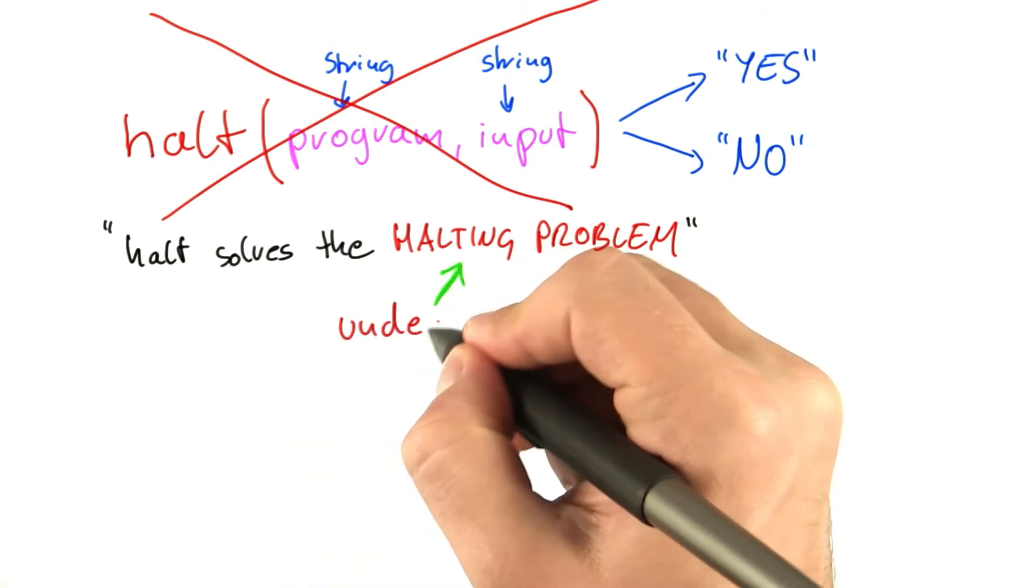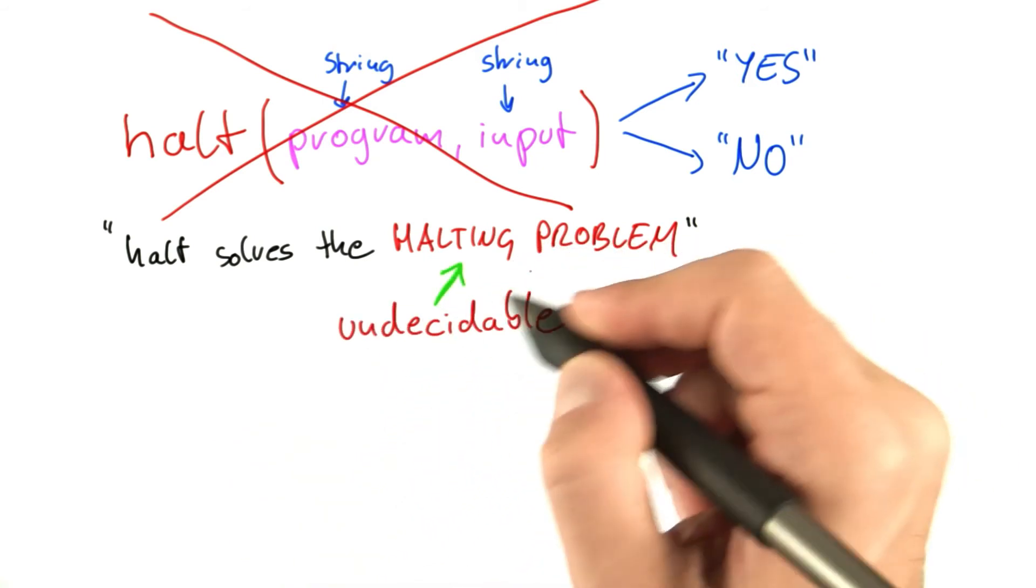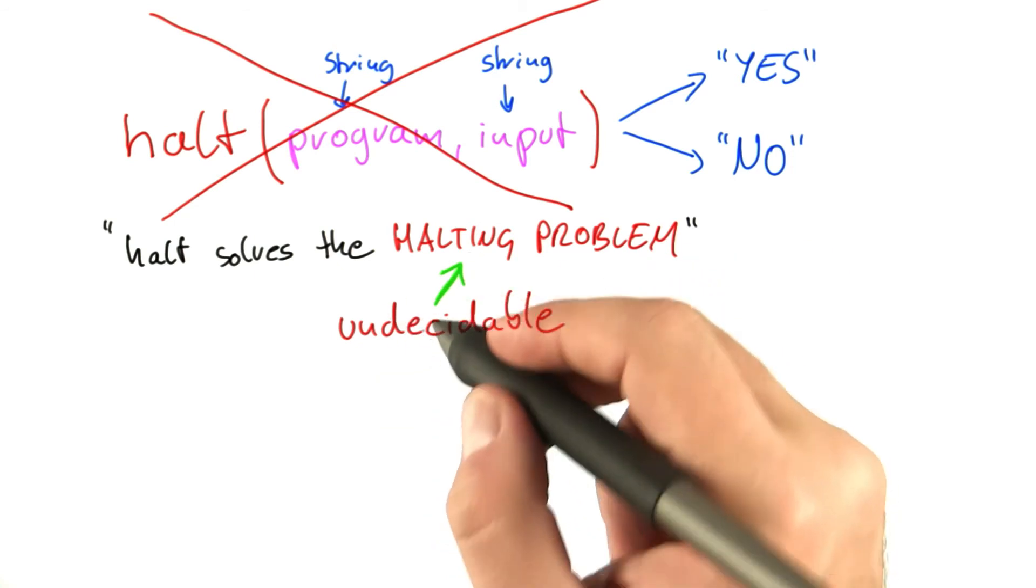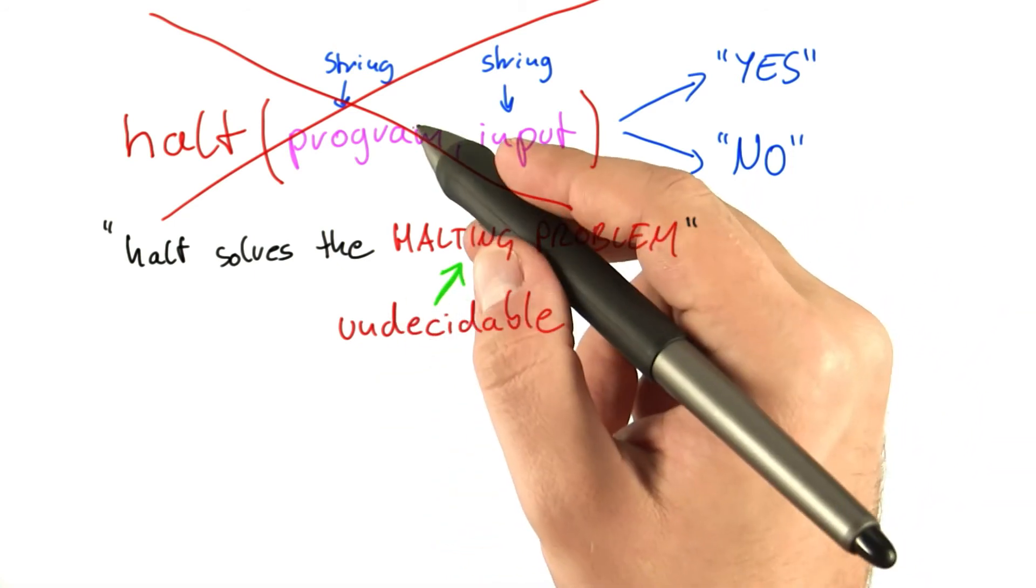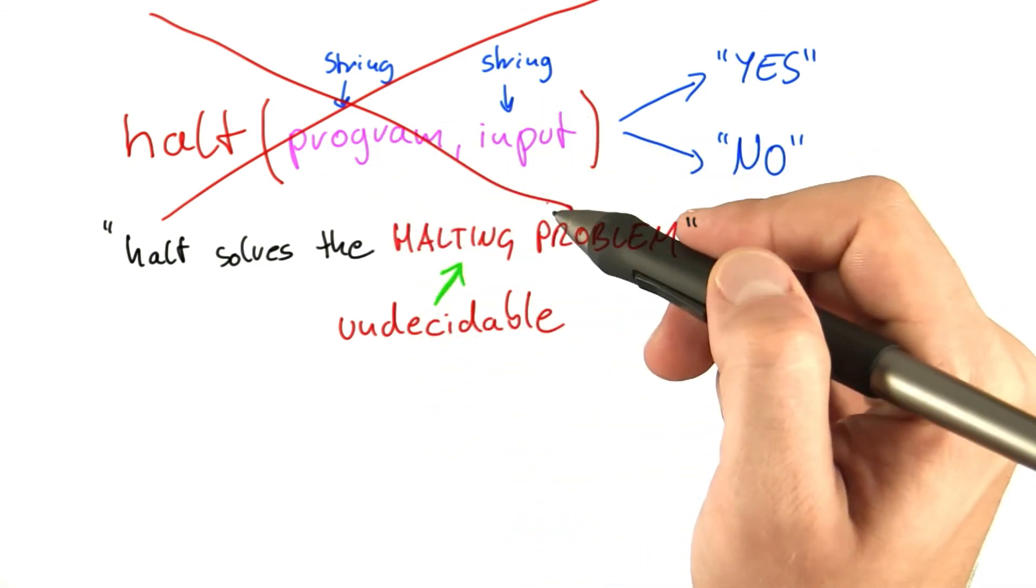The halting problem, in other words, is known as a problem that is undecidable, by which we mean that no computer program or algorithm can reliably decide the halting problem for all possible combinations of programs and inputs.